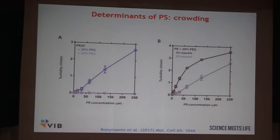To approach the first question, we have shown that there are very strict determinants of this liquid-liquid phase separation. Crowding, for example — if you apply polyethylene glycol at different concentrations, the higher we went, the more apparent the phase separation was. Apparently crowding really pushes molecules together and makes them phase separate.